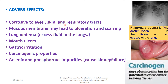What are the adverse effects of using artificial ripening agents? They are corrosive to the eyes, skin, and respiratory tract mucous membrane, and may lead to ulceration, scarring, and pulmonary edema (fluid accumulation in lung tissue and airspace), mouth ulcers, and gastric irritation. These agents have carcinogenic properties — substances with the potential to cause cancer in living tissues — and arsenic and phosphorus impurities can cause kidney failure.